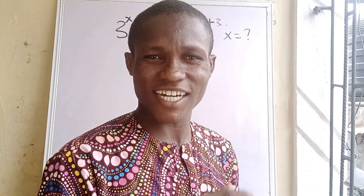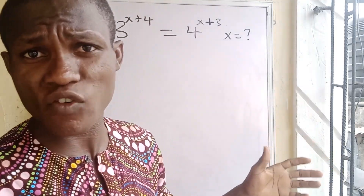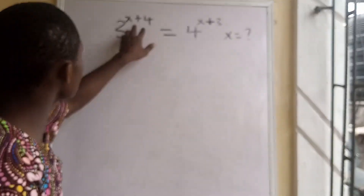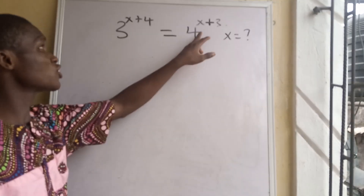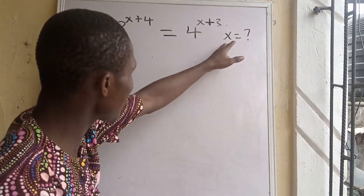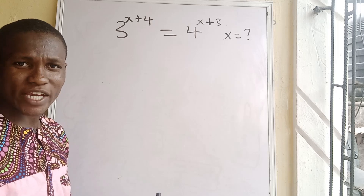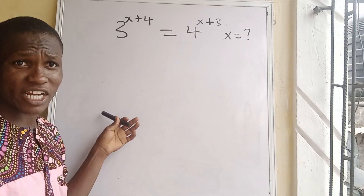Hello guys, welcome again to Drag Race City Grass. The problems of mass are resolved. Today we'll be looking at a wonderful exponential challenge which says: 3 to the power of x plus 4 is equal to 4 to the power of x plus 3. The question asks us to find x.